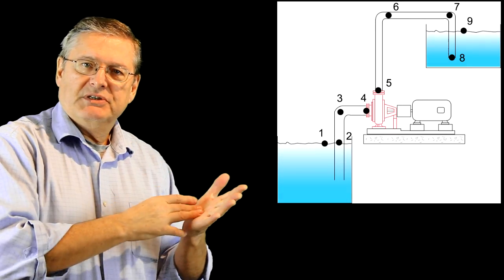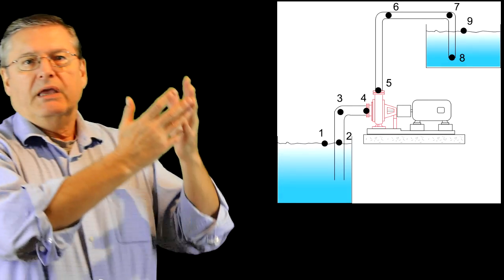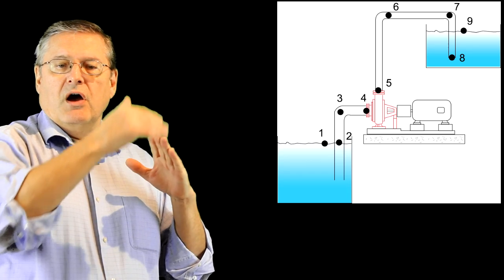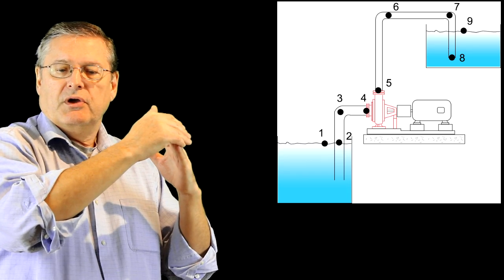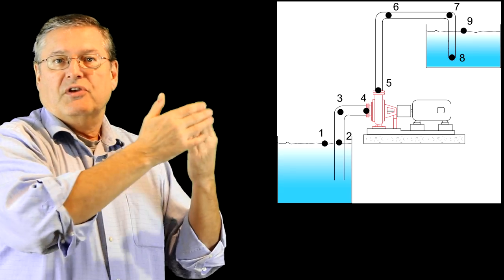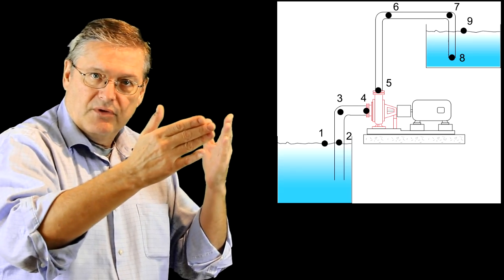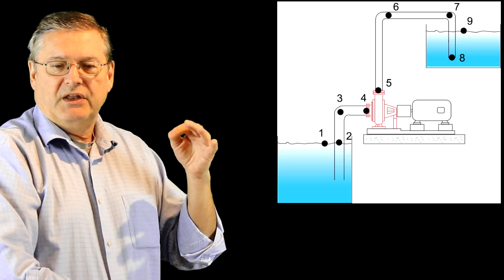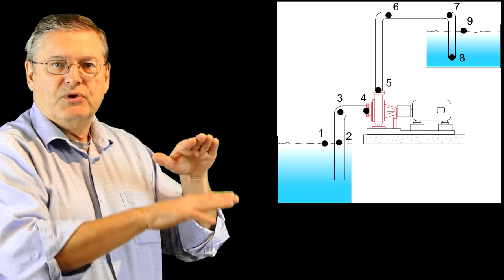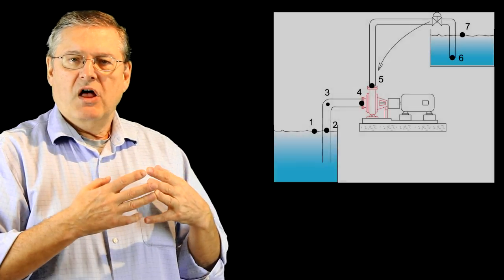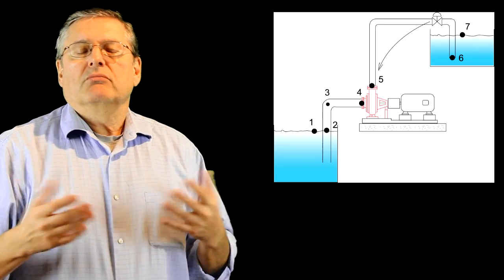The last system we'll look at is similar — we're pumping from a lower source back into a tank over and back in. Point six will be quite high, and pressure will be low because we're much higher than the surface level of the tank. Point seven has even lower pressure due to friction between six and seven. As we drop down, pressure increases. Point eight has the pressure corresponding to the liquid level in the tank, and point nine — the surface level — is zero.